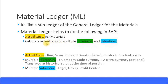Actual cost means you can calculate the actual cost for raw materials, semi-finished goods, and finished goods materials. The material ledger reevaluates the stock at actual prices.